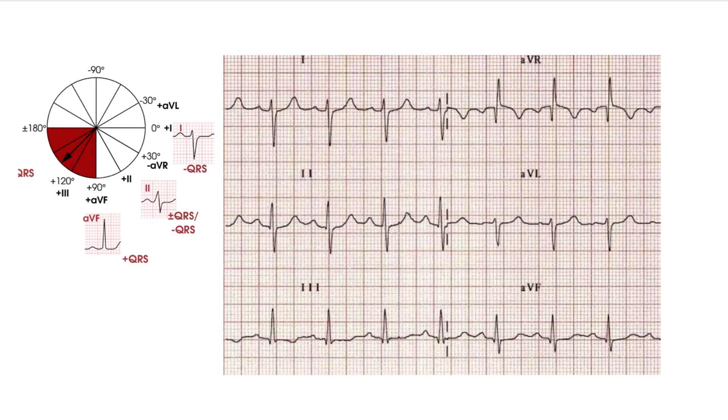And on this ECG we can see a negative QRS complex at lead 1, it's right axis deviation.